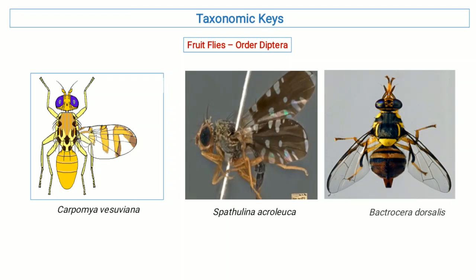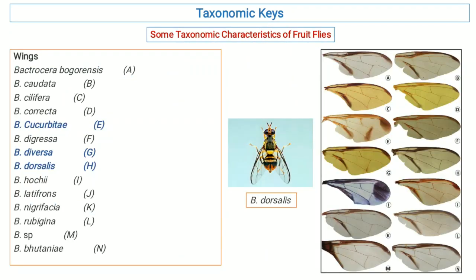Fruit flies belong to order Diptera. The members of order Diptera have two pairs of wings, in which the fore wings are membranous whereas the hind wings are reduced to a knot-like structure. The first taxonomic characteristic of fruit flies is the morphology of wings, which acts as a taxonomic character.